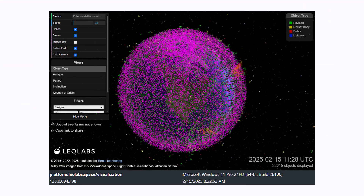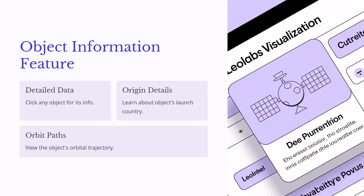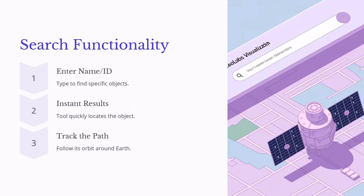All the purple is space debris — unbelievable. The interactive map feature shows real-time positions with objects moving dynamically on the map. You get a global view, seeing objects orbiting from different regions, and it's easy to use with simple navigation controls. The object information feature provides detailed data, origin details, and orbit paths. With the search functionality, you can enter a name or ID of a specific object, get instant results, and track its orbit path around the Earth.